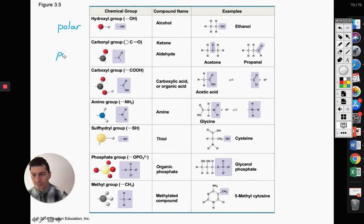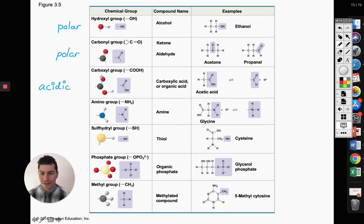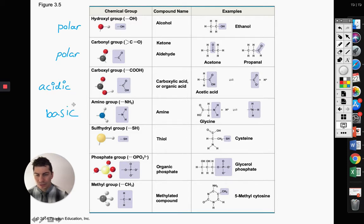Carbonyl — same thing. If you see it added to something, it's going to make it polar. We're going to talk about ketones and aldehydes later on and why they're important. Our next one, carboxyl — it's a C and O and OH — is going to make something acidic. So if you see this, it's going to make that molecule acidic. Now the amino group is going to make it basic. Things get a little weird whenever we have a carboxyl and an amino group together — we have one making it acidic, the other one making it basic. We'll talk about that later.